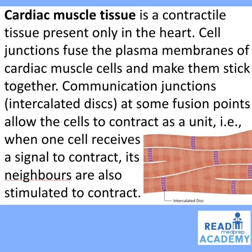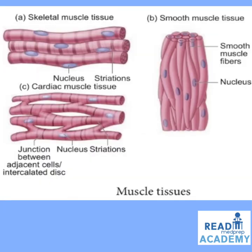Cardiac muscle tissue is a contractile muscle present only in the heart. Cell junctions fuse the plasma membranes of cardiac muscle cells, making them stick together. Communication junctions called intercalated discs at fusion points allow the cells to contract as a unit — when one cell receives a signal to contract, its neighbors also contract together. This is called syncytial contraction. The image summarizes muscle tissue: skeletal muscle has nucleus and striations; smooth muscle is fusiform with a nucleus; cardiac muscle has mild striations and intercalated discs.